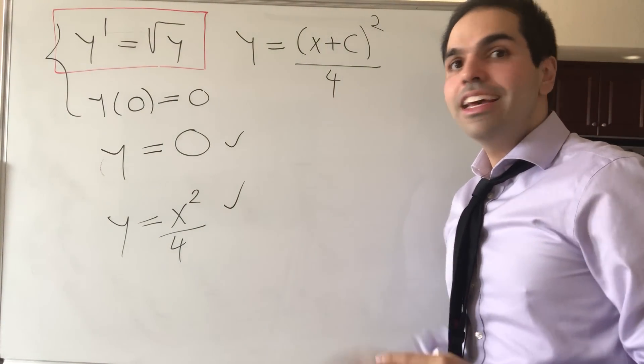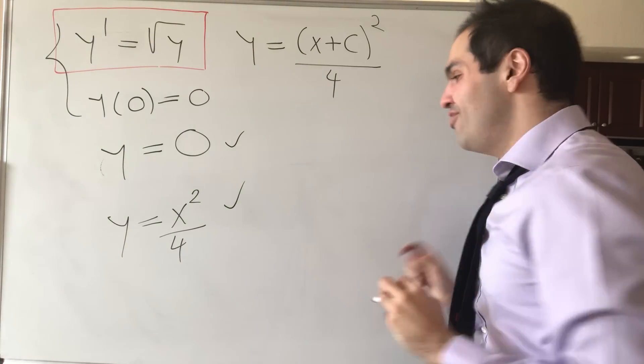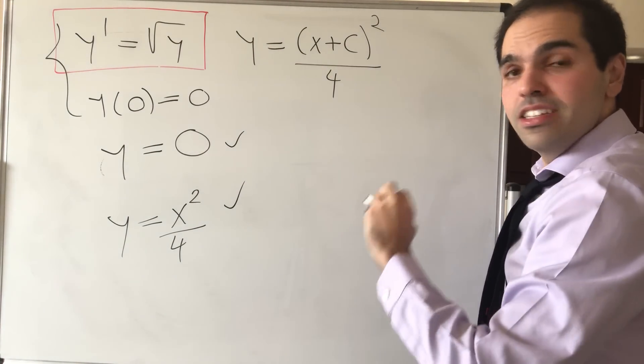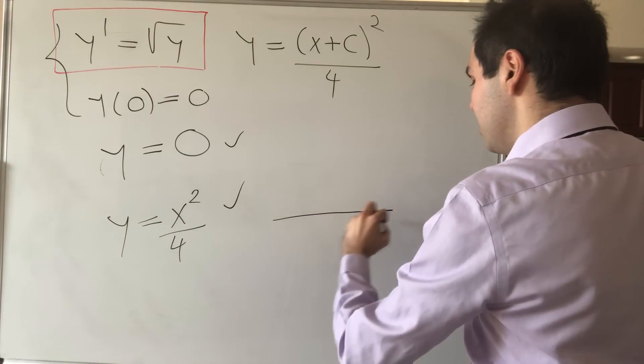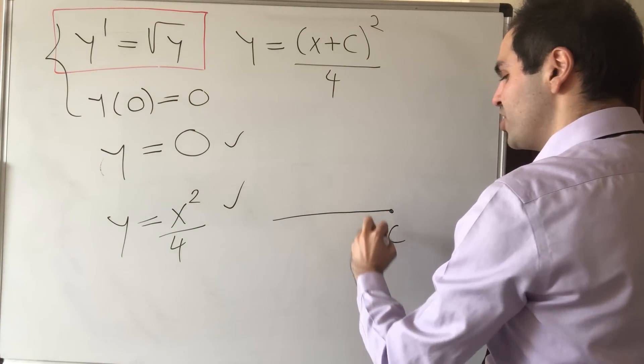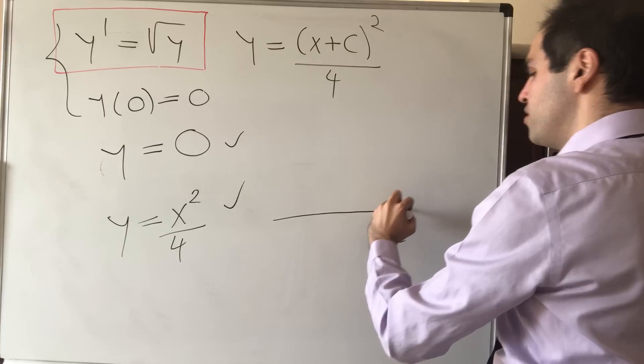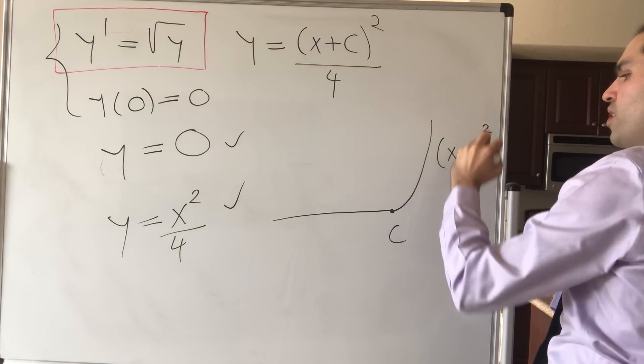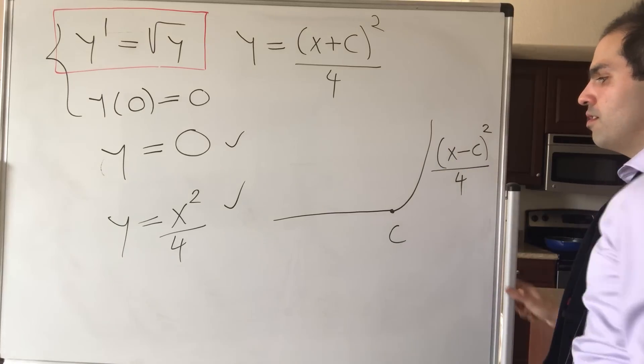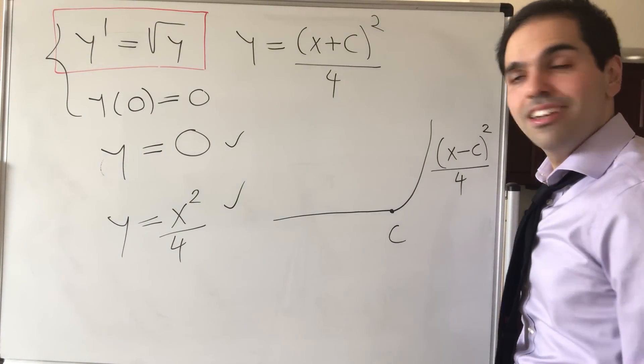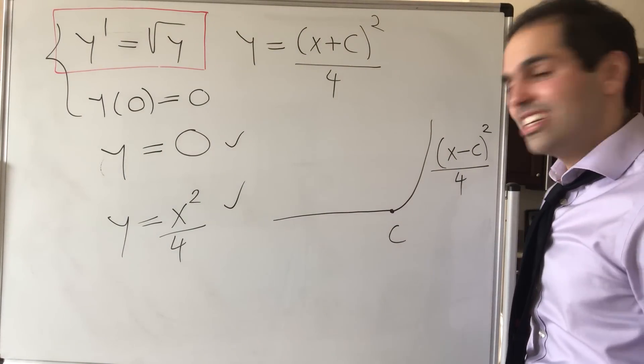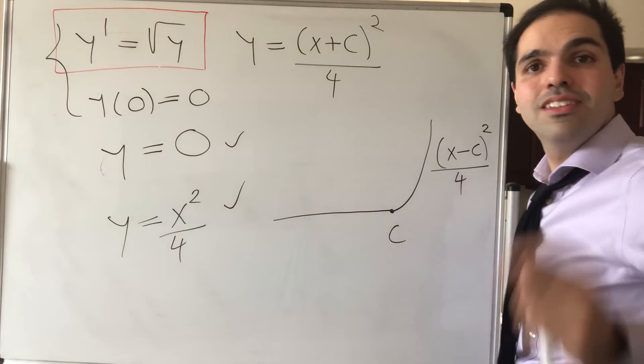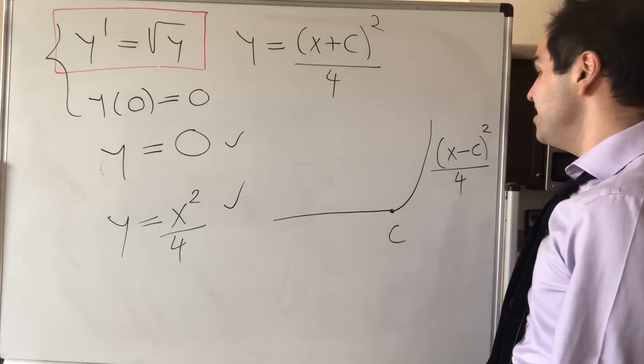And even worse, it turns out this equation has infinitely many solutions. Because for any positive constant c, you could also have the function, which is 0 up to c, and then x minus c squared over 4. You can also check that this satisfies the equation. And again, it doesn't matter if we put plus c or minus c, because c is arbitrary.